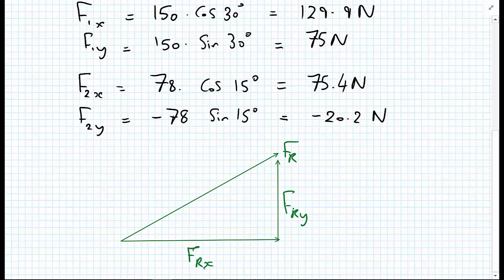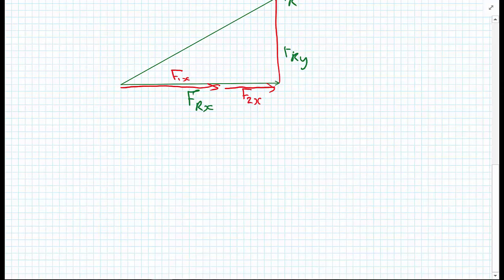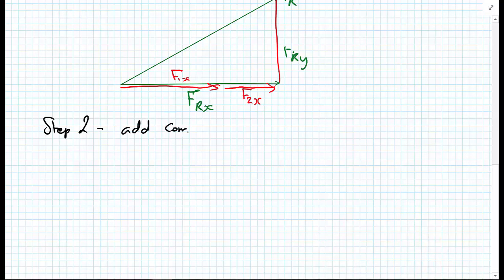And the FRx consists of F1x and F2x. And similarly, for the Y component, we will have part of that which is from F1x, which is the 129.9. The F1x is 129.9, but we had a negative component of minus 20.2, which took us to our total Y component of the force vector. So we're just going to add the X and Y components together to get our Cartesian components of the resultant force vector. Step two, add components.